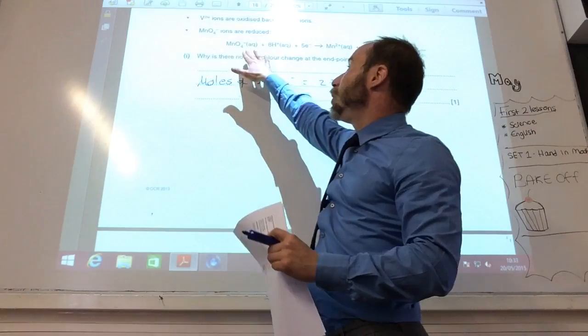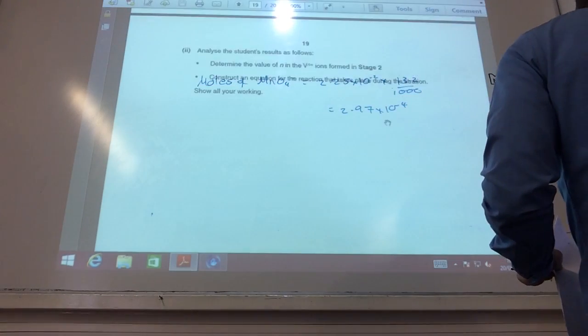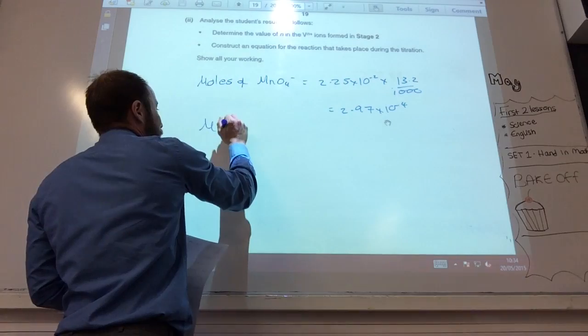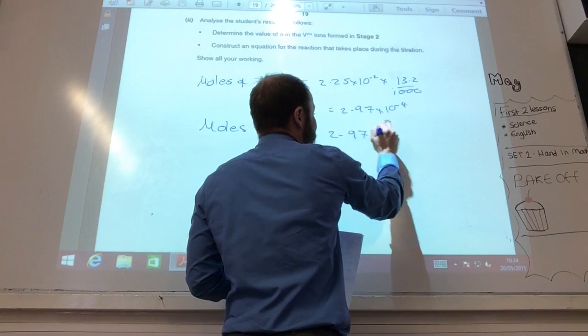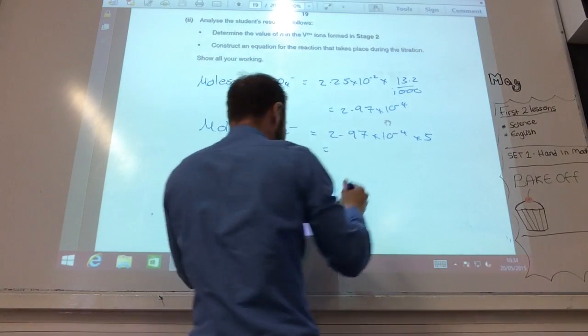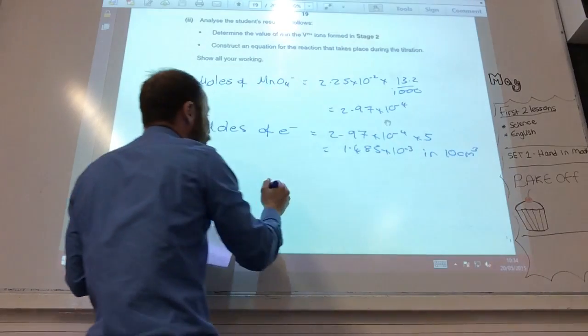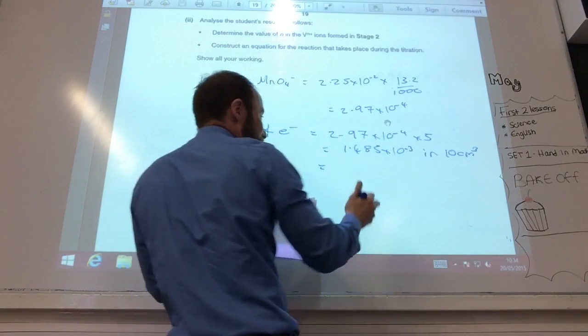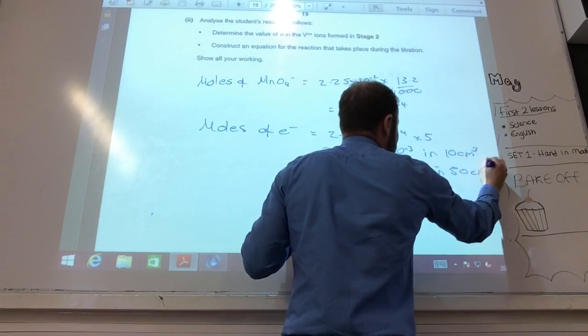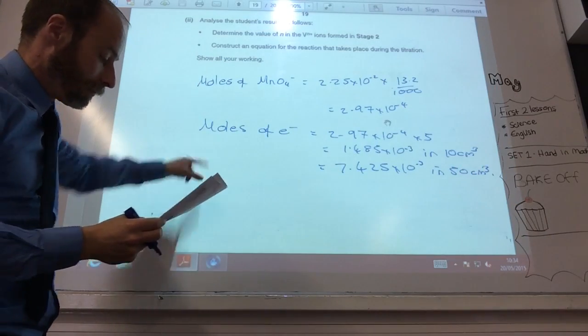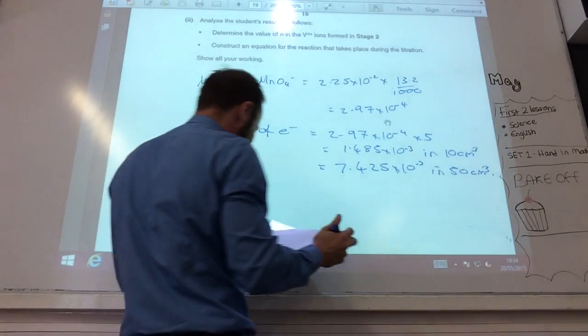OK, so, if we go back, that's the number of moles I used. So, going back to this equation, yeah, this is what you know. One of those uses 5 electrons. So, I'm now going to relate that to how many moles of electrons did I have? It was vanadium. Times by 5. I need to times that by 5, don't I? 2.97×10^-4, times by 5. 1.485×10^-4. Great. That was in 10 cm³. What was the original solution? 50. In 50, so I need to times that by 5. So, that's 7.425×10^-3 in 50. We're finding the number of electrons. That's the moles of electrons.